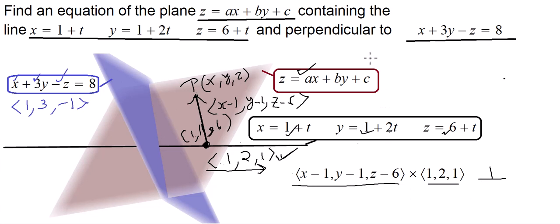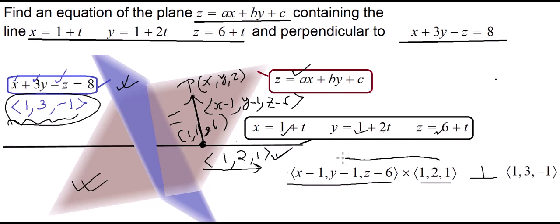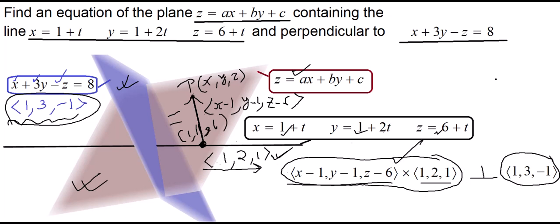There is another tool we have: the vector 1, 3, negative 1 is perpendicular to the blue plane, and the blue plane is perpendicular to the plane we want. As a consequence, this vector 1, 3, negative 1 will be parallel to our desired plane. So the dot product of the cross product result with this vector will be zero.